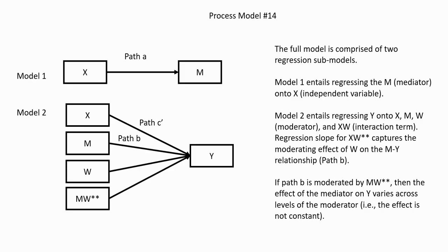Now let's consider the two submodels that comprise this overall model. The reason we're discussing these submodels is that this is how the output is broken out when you're running your analysis using model 14 in PROCESS. In model 1, we have X predicting our mediating variable, and we get path A. In model 2, we have X, M, our moderator W, and an interaction term formed as a product of M and W — all of those predicting our dependent variable Y.